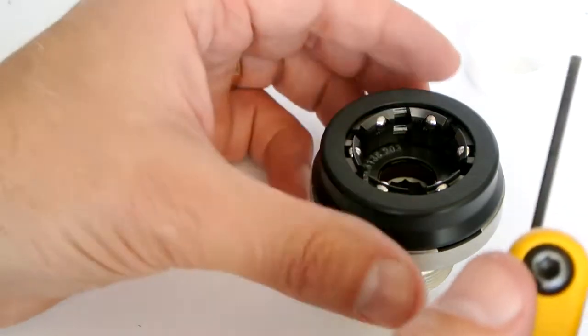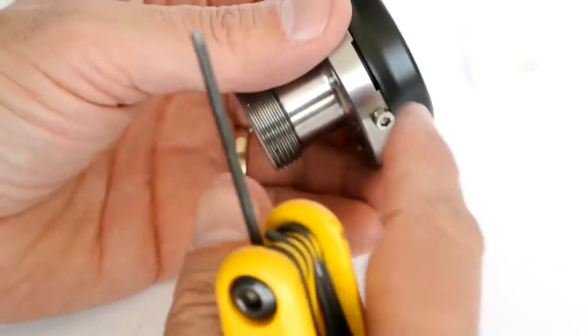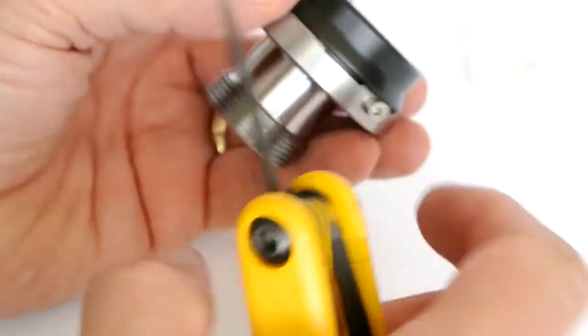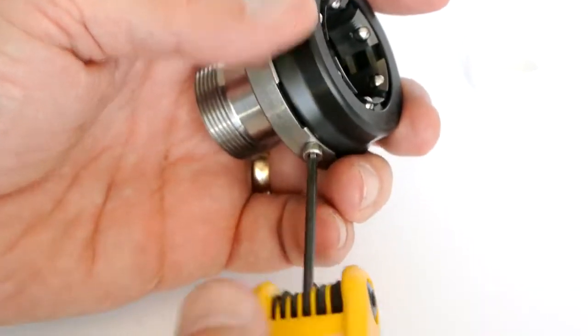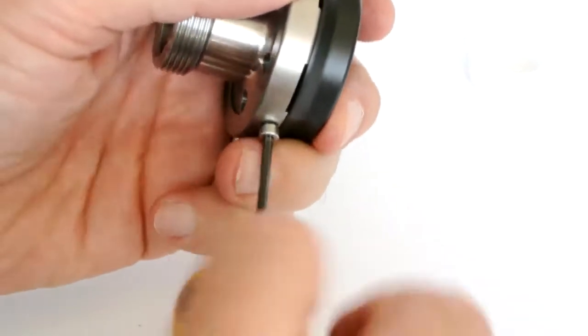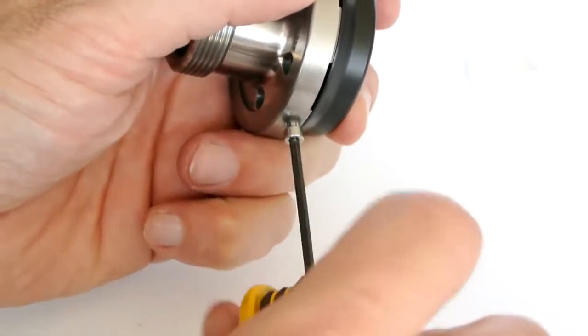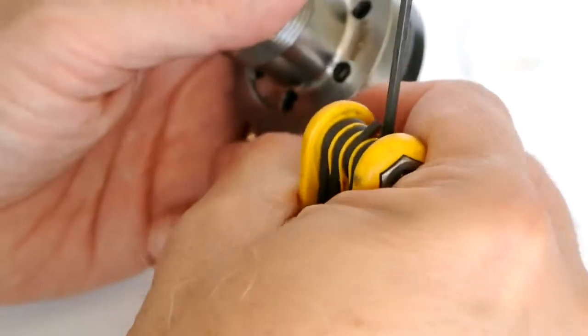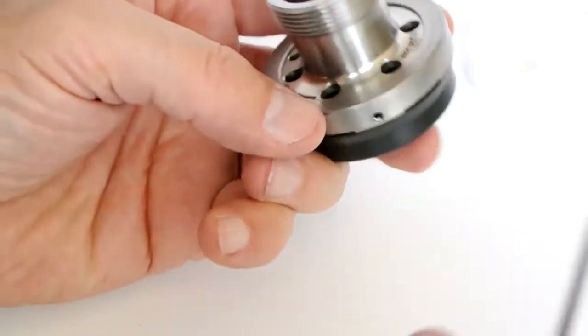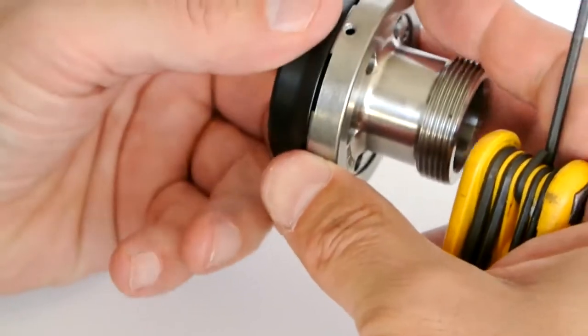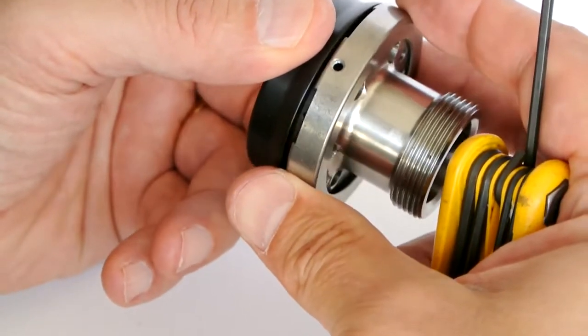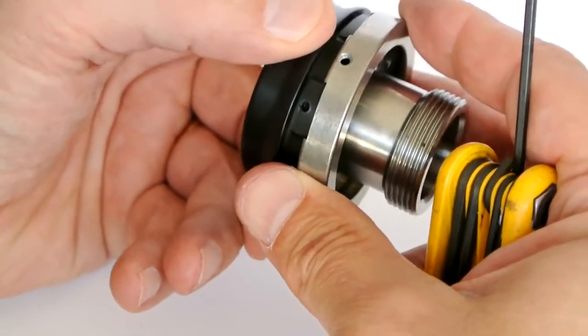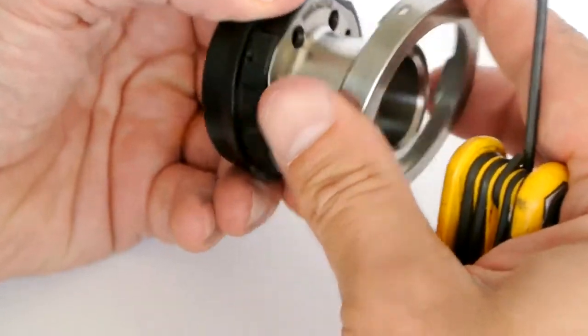To disassemble the chuck, start by removing the locking screw in the lock ring. Rotate the lock ring until you can lift it off the chuck. Fifteen degrees from its original position is all that's required.